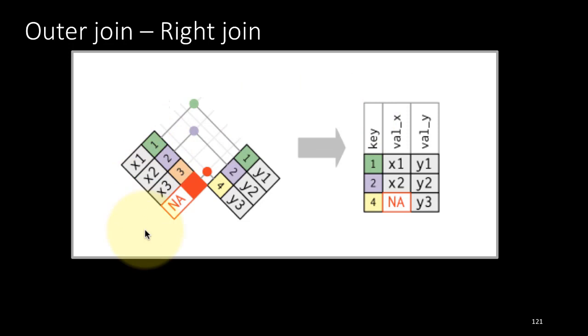Exactly analogous to the left join, we have another kind of join called the right join. This time the tibble on the right is going to take priority. So if we take this example, we are joining the tibble on the left with the tibble on the right. For the first two rows there is a match — one and one, two and two — a perfect match. Now the four doesn't match and doesn't have a match in the x tibble.